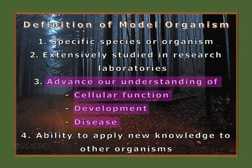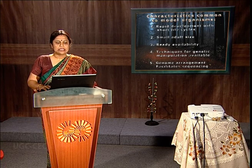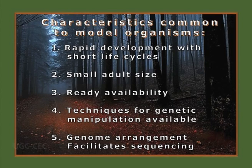Model systems also help in understanding diseases, and we can apply the knowledge gained from model organism studies to other organisms that are difficult to study. The characteristics common in a model organism — number one: rapid development. They should be very fast-growing so that we can study them many times and repeat results, as science demands repetition of results before inferring any conclusion.